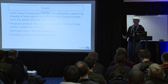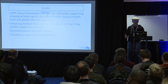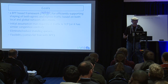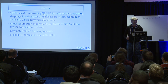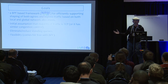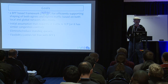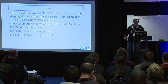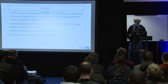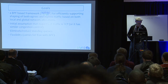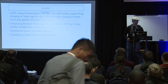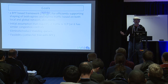The goal is to create a BPF-based framework for efficiently supporting the shaping of both egress and ingress traffic, based on both local and global network allocations. The initial assumption for simplicity is that most of the traffic is either TCP or has similar congestion control, although we also shape other traffic — especially for egress, it's easy, you just drop it. For ingress, it's something we're planning to implement. We also want to eliminate standing queues so that we do not increase latency, and we want the flexibility that comes for free when we use BPF.